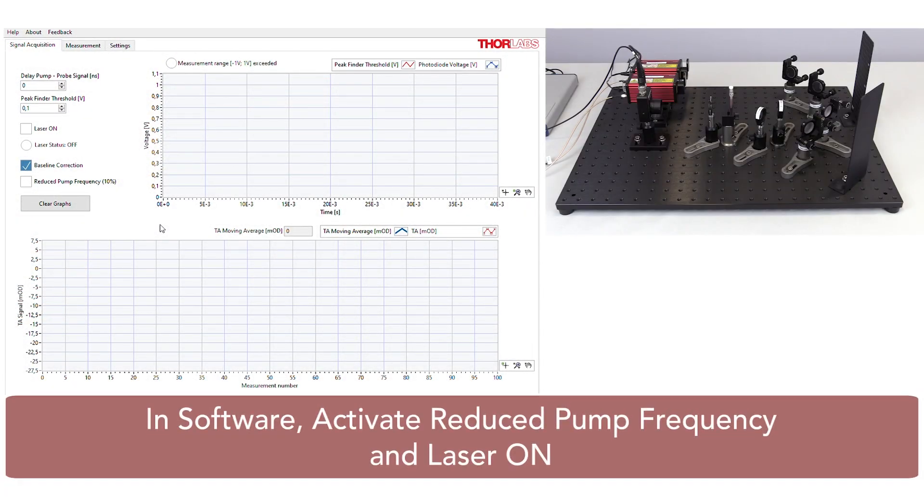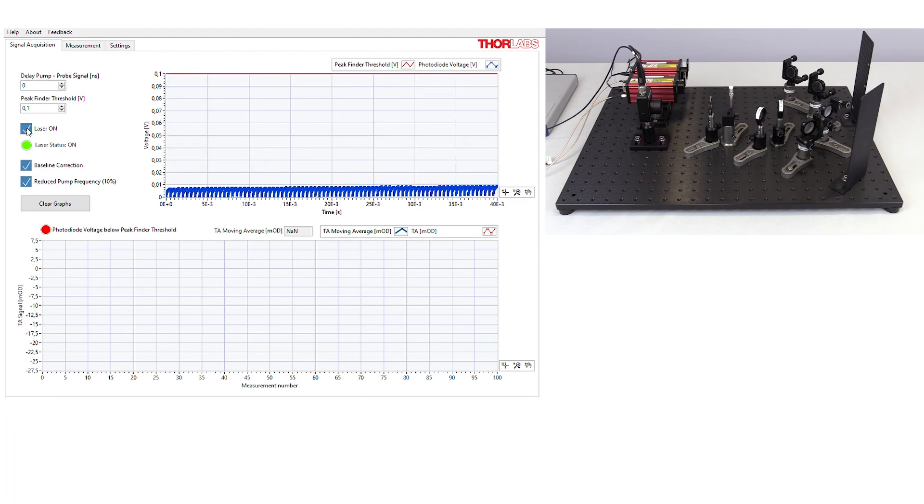Next, open the software for this educational kit. Check the box for reduced pump frequency and then activate the laser. A green circle should appear next to the laser status and the status should read on.